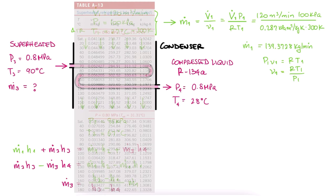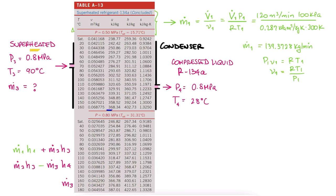We go to the superheated tables and see that for a pressure of 0.8 MPa and a temperature of 90 degrees Celsius, the enthalpy is 327.12 kJ per kilogram, and that is H3.